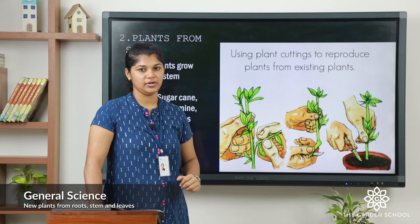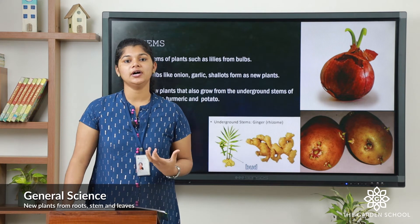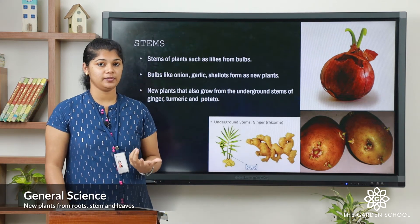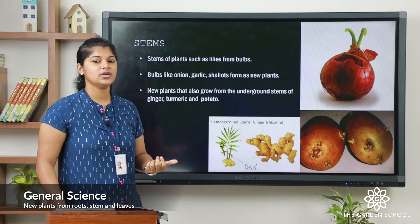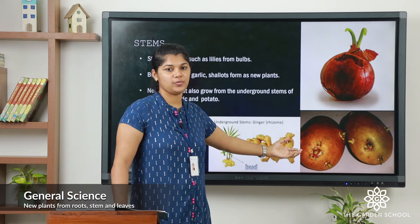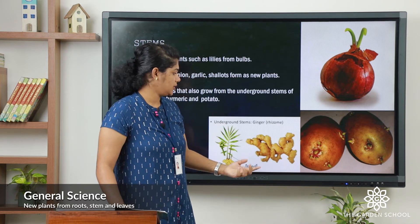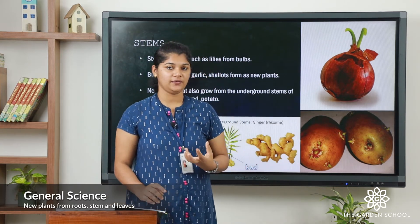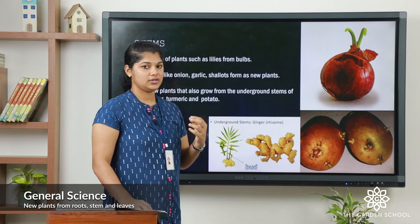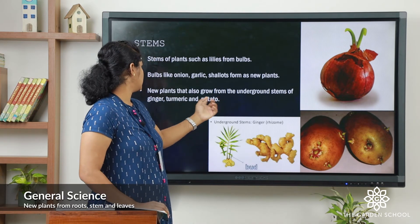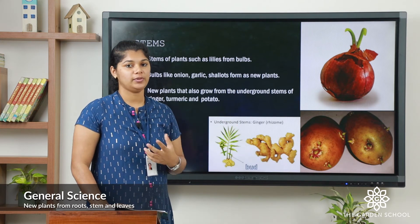Stem of plants such as lilies form a bulb. The best examples for bulbs are onion, garlic, and shallot — from these, new plants grow. You can see in the rainy season this potato and this onion start to grow new plants. The eye part of the potato is where new tiny plants can grow. Even underground stems like ginger, turmeric, and potato can also produce new plants.